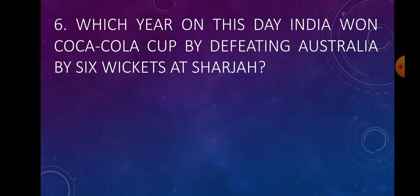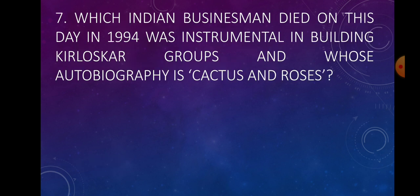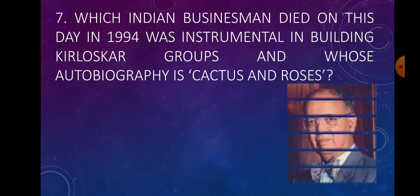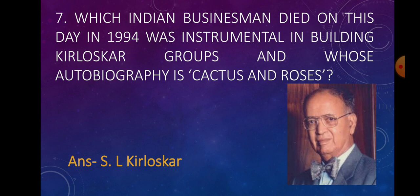Question number 6: Which year on this day did India win the Coca-Cola Cup by defeating Australia by 6 wickets at Sharjah? Question number 7: Which Indian businessman who died on this day in 1994 was instrumental in building the Kirloskar group, and whose autobiography is Cactus and Roses? Answer: S.L. Kirloskar.